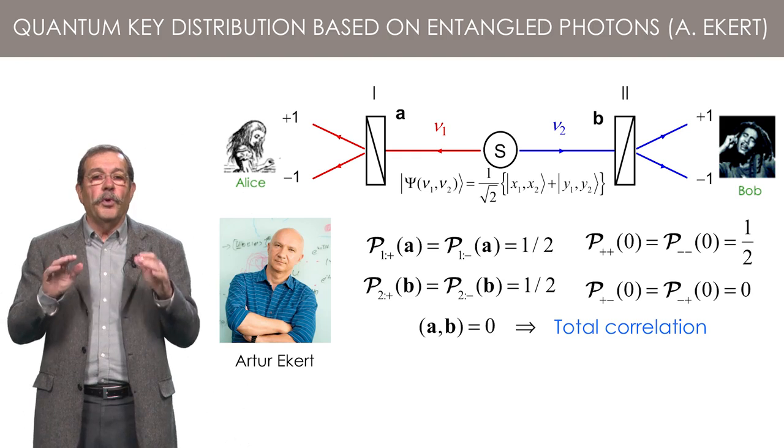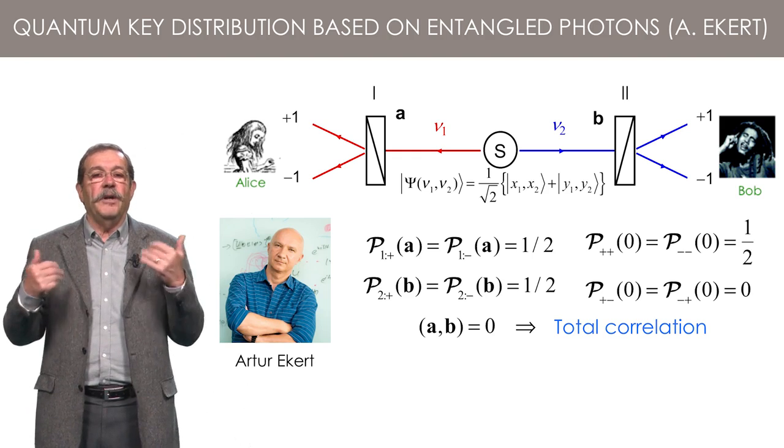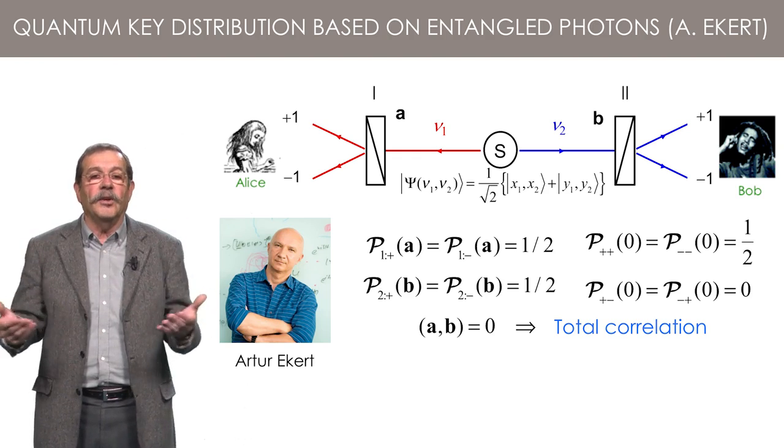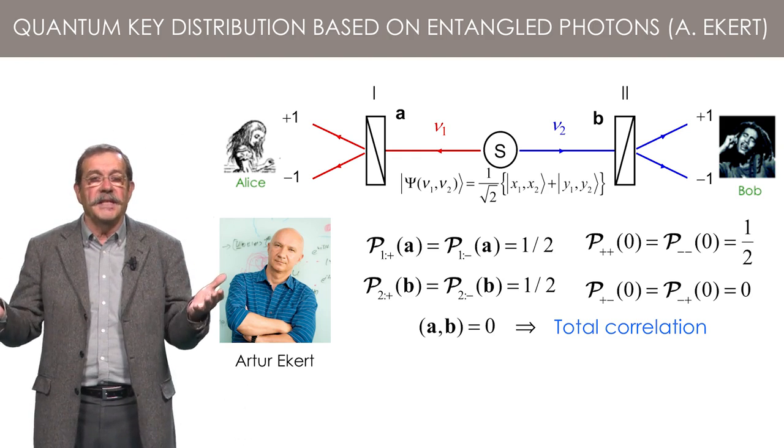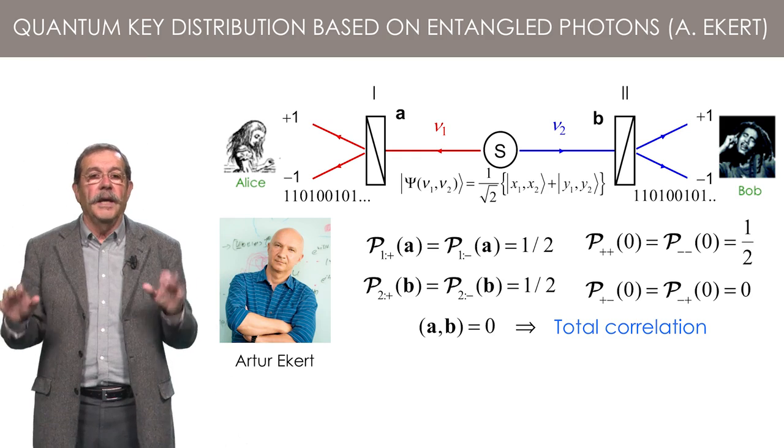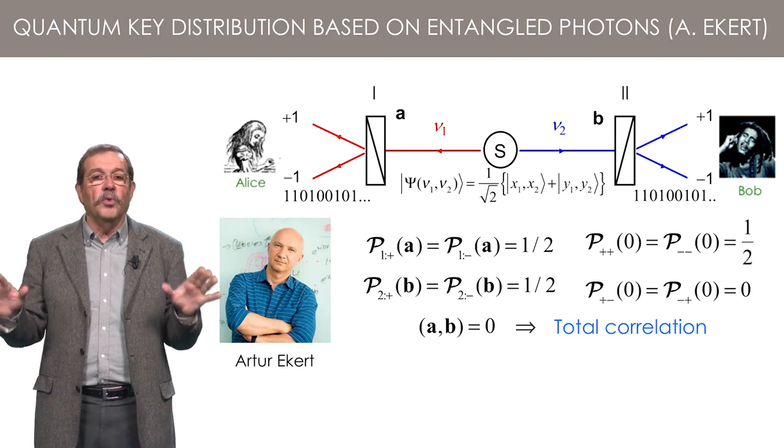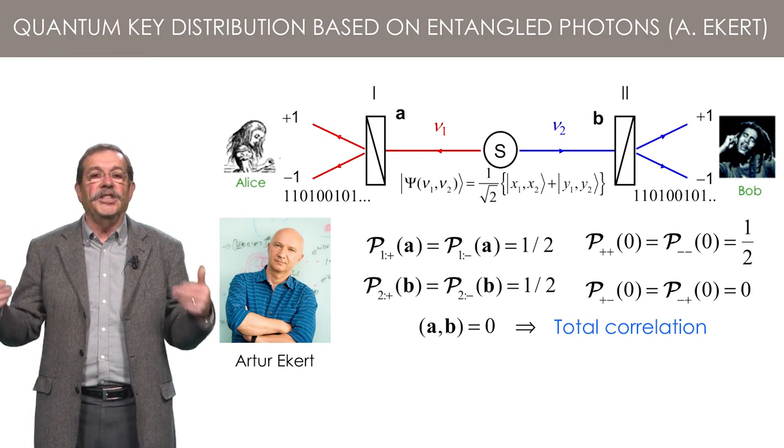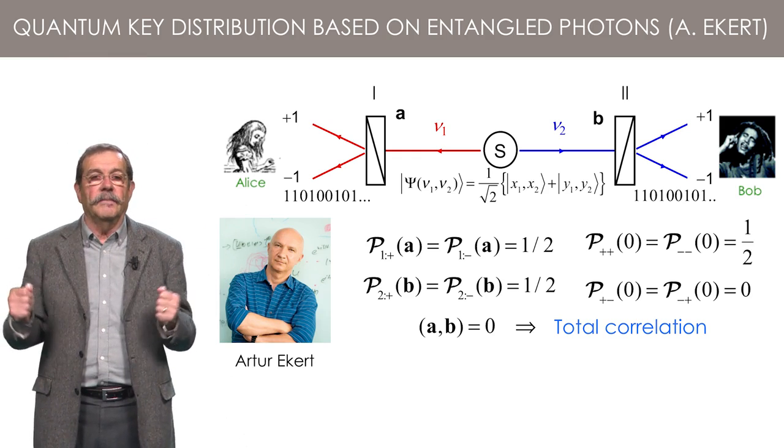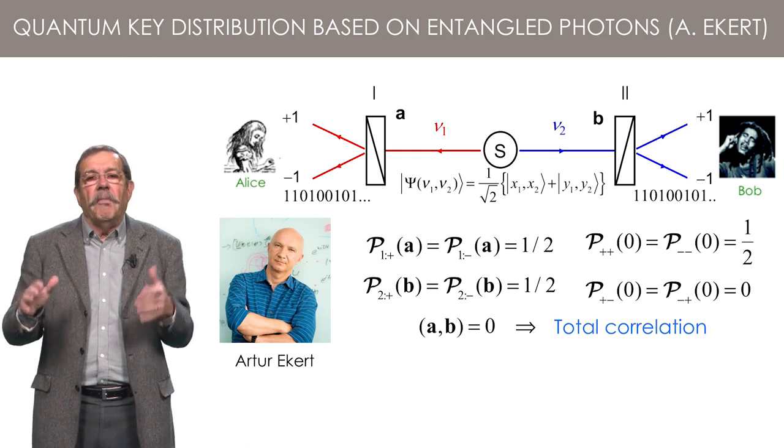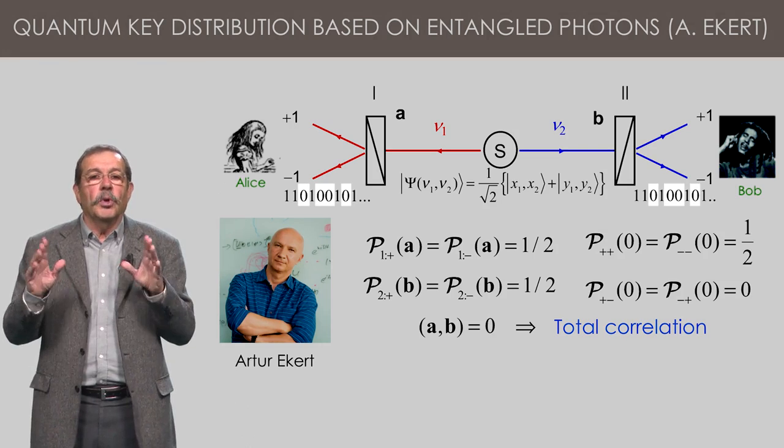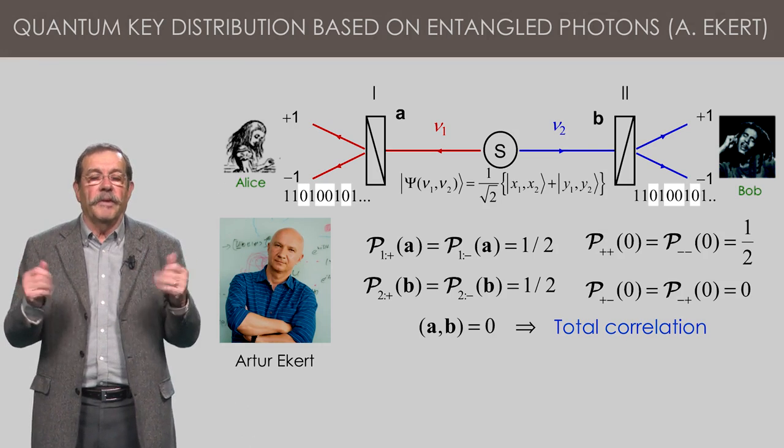They are either both plus 1 or both minus 1, and the crossed cases never happen. So, the process itself, in its very fundamental nature, produces two identical random sequences on each side. These can be used as two identical encoding-decoding keys generated at each side. I have replaced the minus 1 outcome of the polarizer by 0 to respect the usual convention in cryptography.